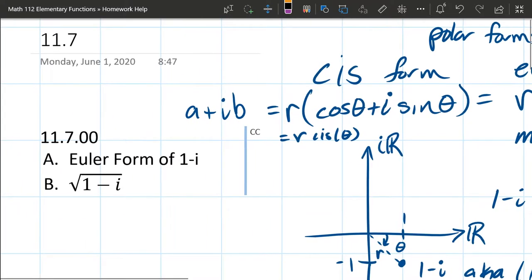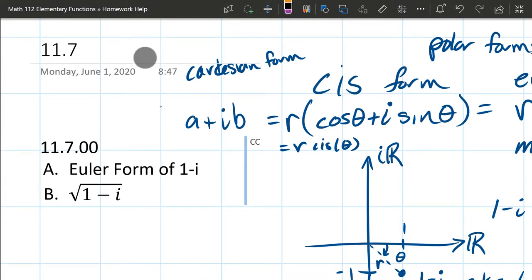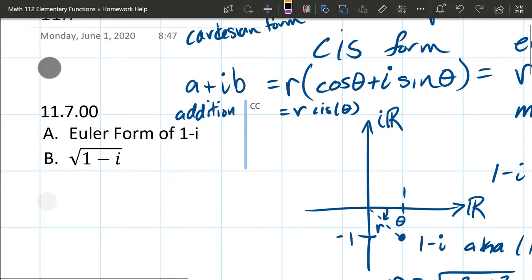You can multiply over in Cartesian form, but you have to remember i squared is negative one. You need to FOIL, and it's a few more steps. Cartesian form, what is it good for? It's good for addition or subtraction. So that's what Cartesian form is very good for.